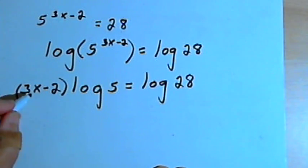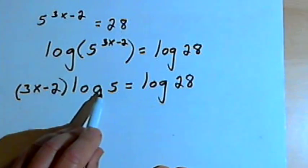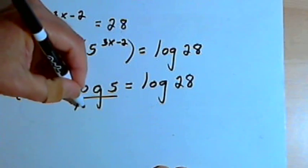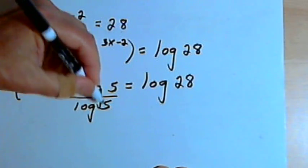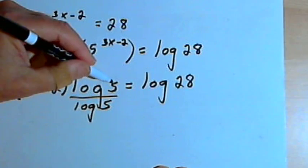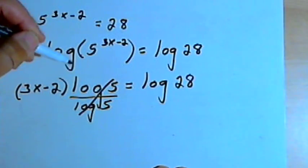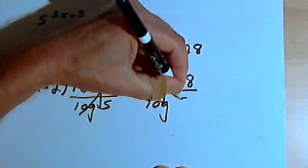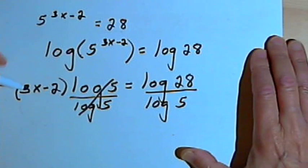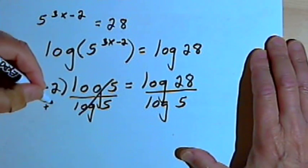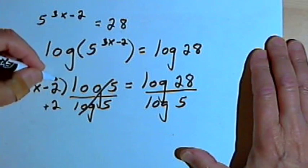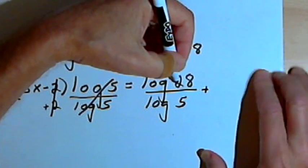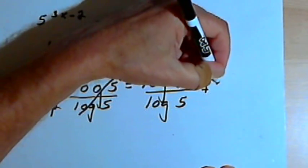Now all I've got to do is isolate the x. The first step is to divide both sides by the log of 5. When I divide the left side by the log of 5, I get log of 5 over log of 5, which is just 1, so I can cancel those out. The right side is going to be log of 28 over log of 5. Now the left side is 3x minus 2, so I want to add 2 to both sides. That gives me 3x equals log of 28 over log of 5, plus 2.